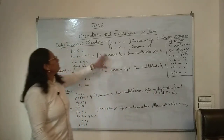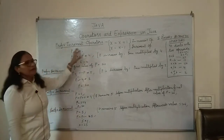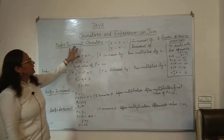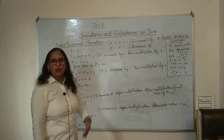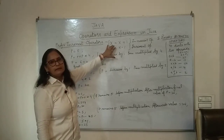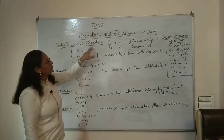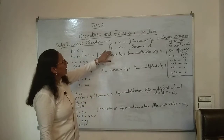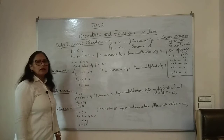Let's continue with our last topic: prefix and postfix operators. We already know that increment operators add one to the existing value in a variable, so X = X + 1 is the increment and X = X - 1 is the decrement operator, which we already discussed in our last lecture.